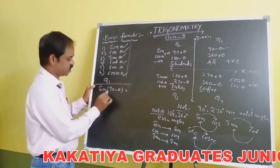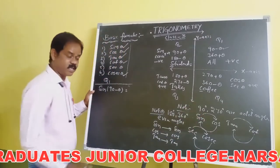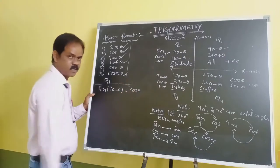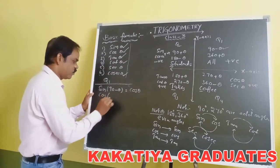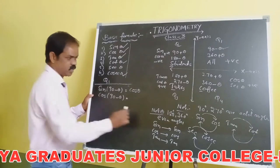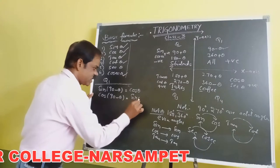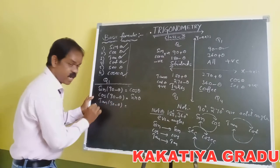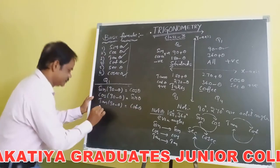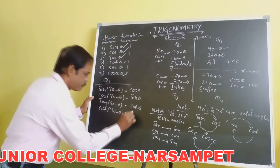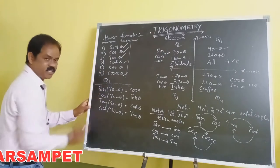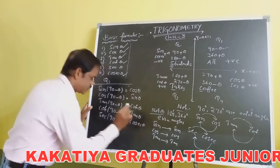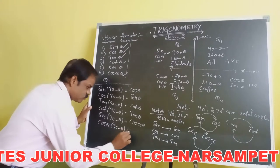Let us consider sin(90 − θ). Since 90 is an odd multiple, sin changes into cos, so sin(90 − θ) = cos θ. Next, cos(90 − θ) = sin θ. Next, tan(90 − θ) = cot θ. Next, cot(90 − θ) = tan θ. Next, sec(90 − θ) = cosec θ. And cosec(90 − θ) = sec θ. This is the concept of the first coordinate.